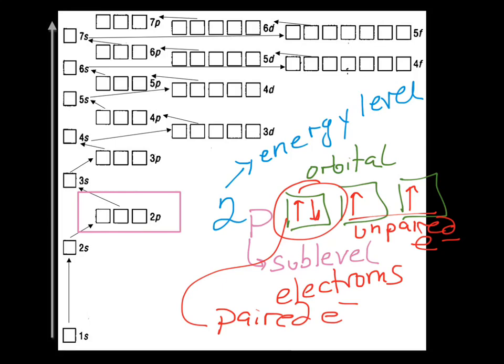Two doesn't necessarily mean a pair. A pair of electrons is when you have two electrons in the same orbital with opposite spins. So one more time, these guys here are paired and these two here are unpaired. So now let's try to do this. I take it back. We've got a little bit more to go over here.